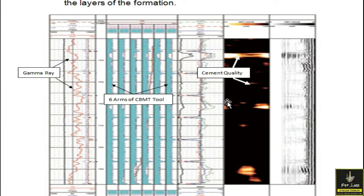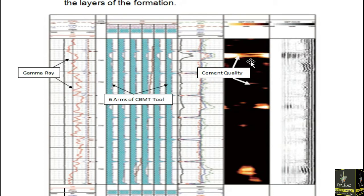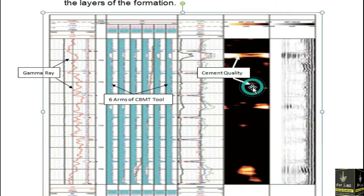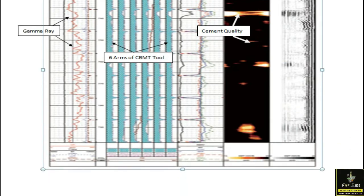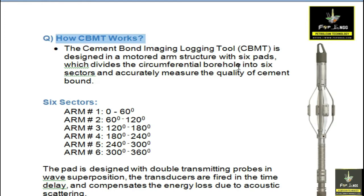Here you can see the logs which show the readings of the CBMT logging. This is the gamma ray, which I will explain later. These are the six arms of the CBMT tool. This yellow color shows that the cement is not good, and this dark brown color shows that the cement is very good.